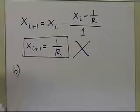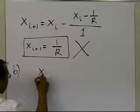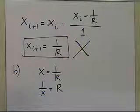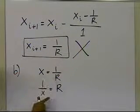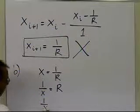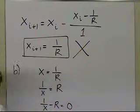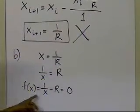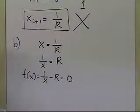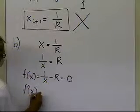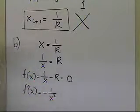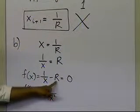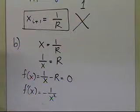I might take a different route. I'm going to say x equals one divided by r, that means one divided by x equals r, because if x is the inverse of r, then r is the inverse of x. So I'll get f of x equal to one divided by x minus r as my function. I need the derivative of this function, which is minus one divided by x squared, because the derivative of one over x is minus one over x squared, and the derivative of r is zero since it's a constant.